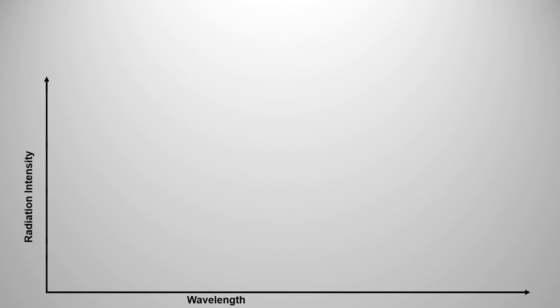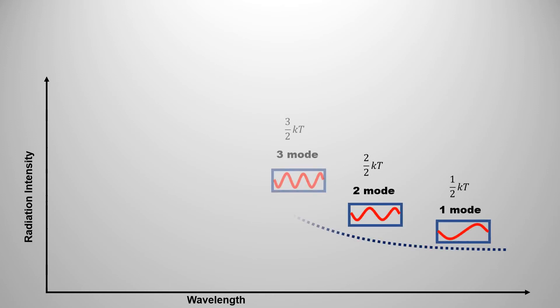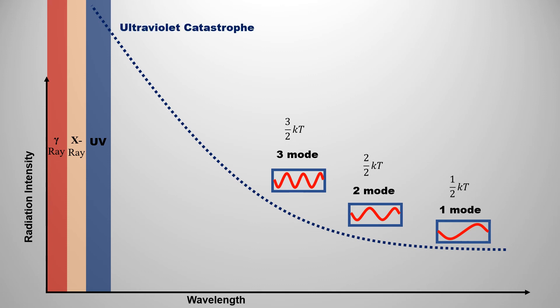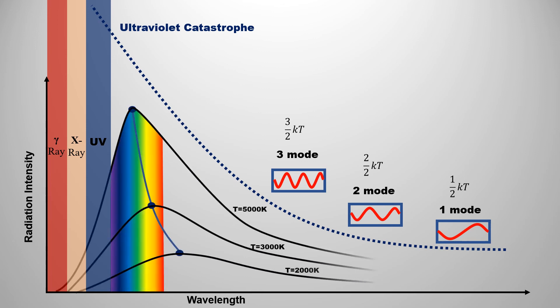If we draw this prediction of Rayleigh-Jeans' law on a graph, then as we move from longer wavelengths to shorter wavelengths, as the modes increase, the radiation also increases. The wavelengths of ultraviolet, X-ray, and gamma rays are so short that the number of modes is extremely large. For the ultraviolet region, Rayleigh-Jeans' law predicts a huge amount of radiation. This is called the ultraviolet catastrophe. According to this, if the temperature of the blackbody is anything more than zero, then for shorter wavelengths, a huge amount of radiation would be emitted. But this is a violation of the conservation of energy, and in reality, blackbody radiation behaves differently from this.